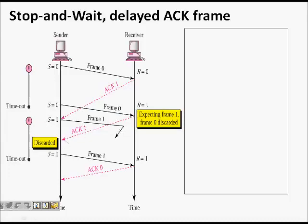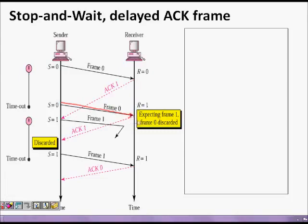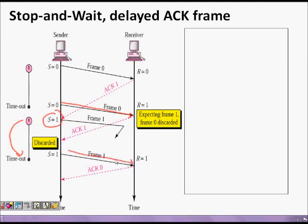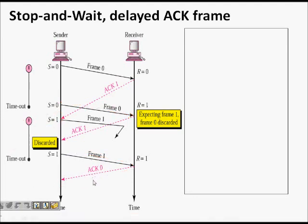Frame 0 was already received so it is discarded, but ACK 1 is sent to request frame 1. Frame 1 had already been sent but was dropped. A timer had started for frame 1; the ACK 1 was discarded because frame 1 had already been transmitted. After timeout, frame 1 is retransmitted, received, and ACK 0 is sent. So retransmission can happen even due to a delayed acknowledgement.